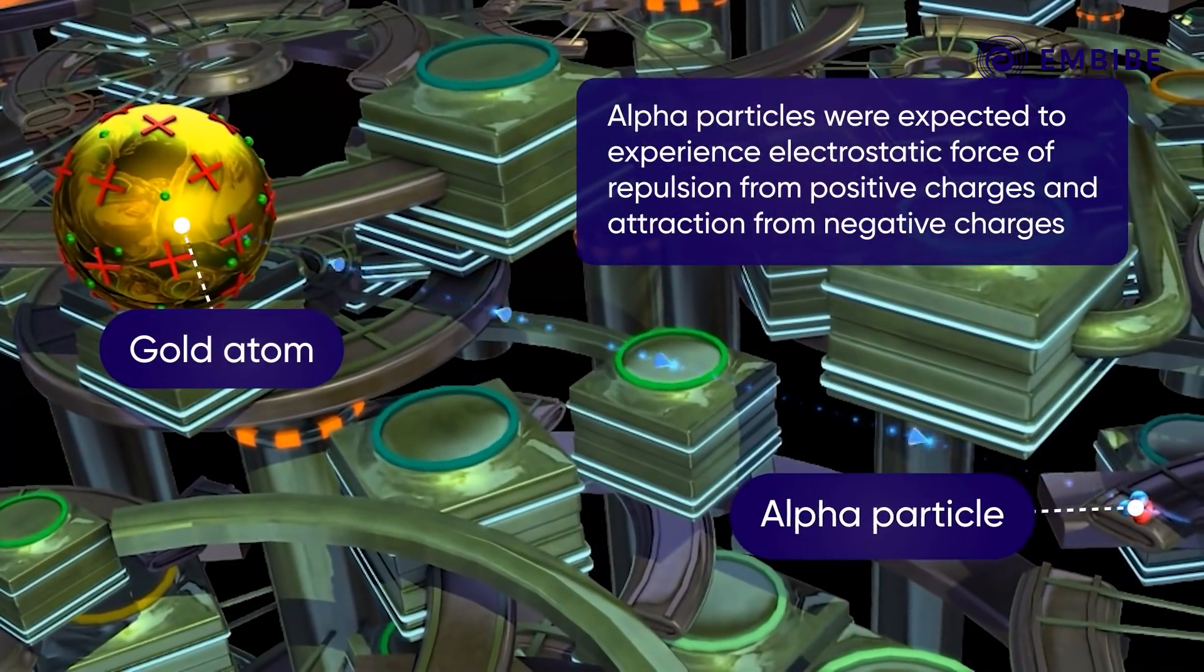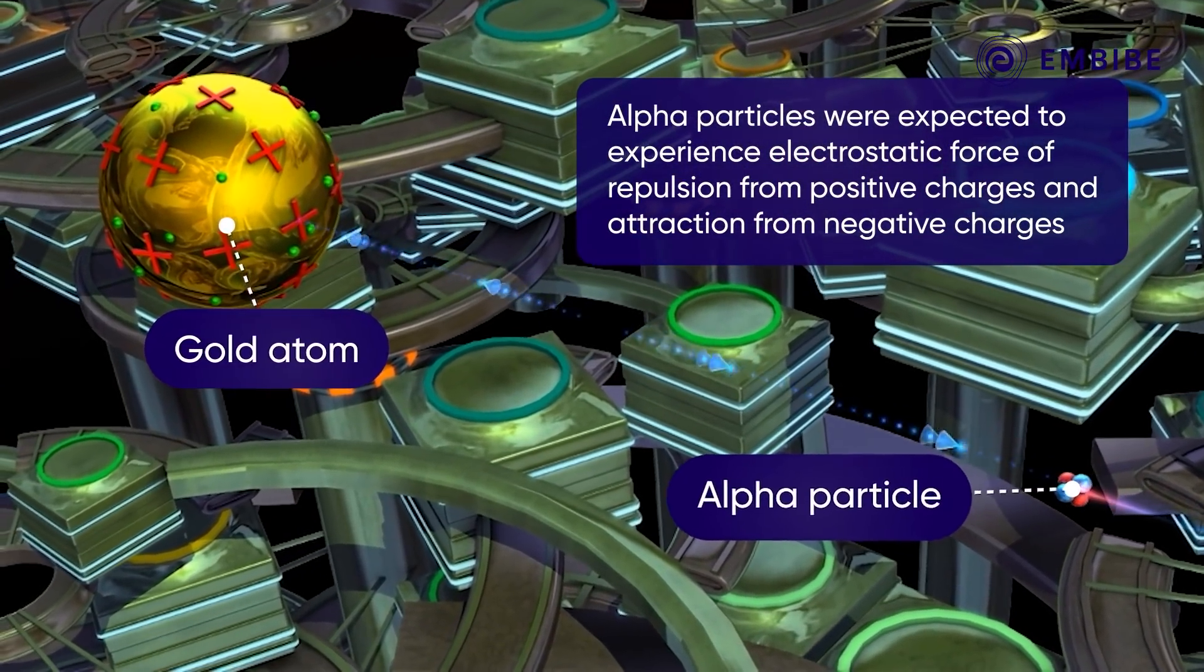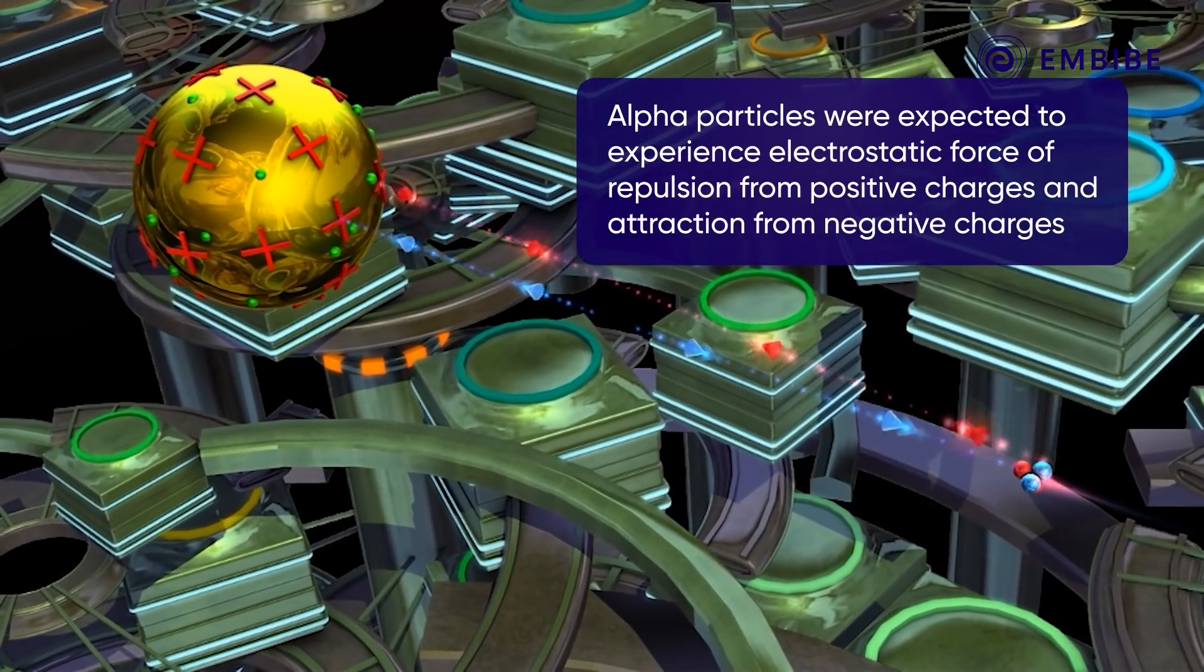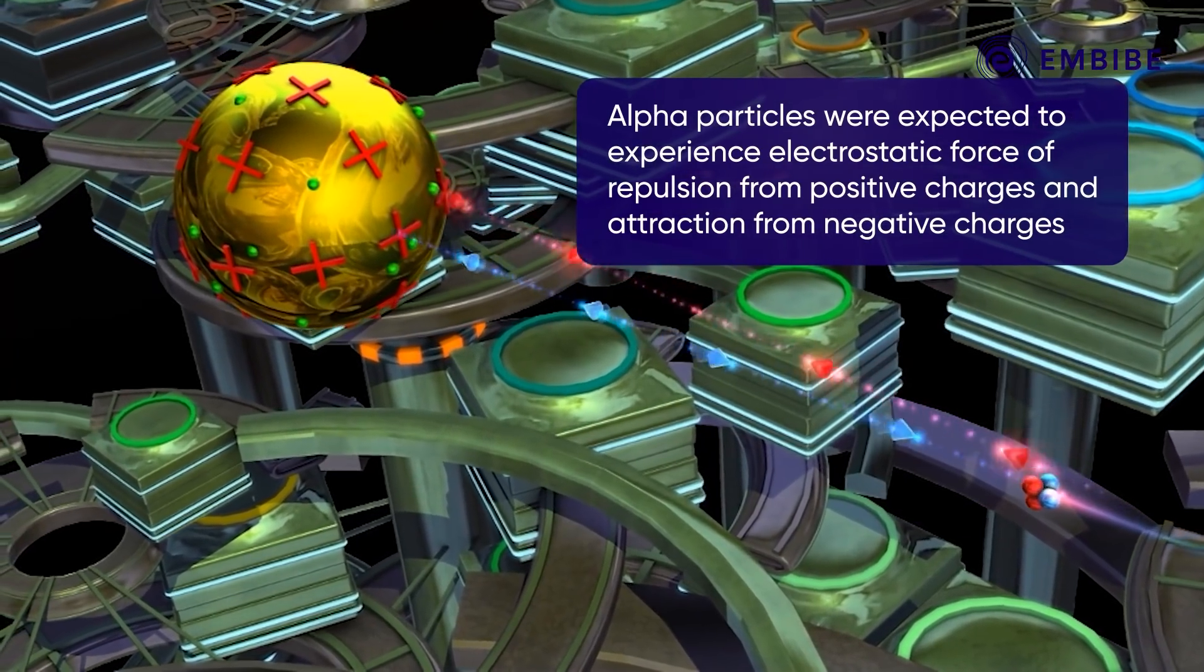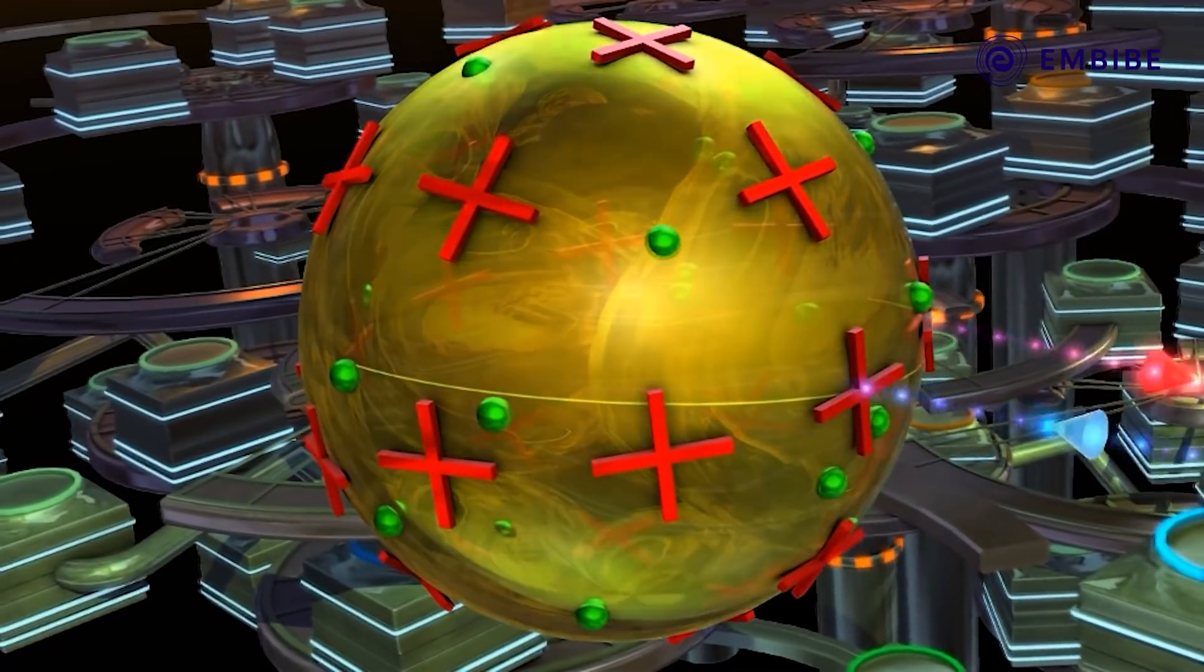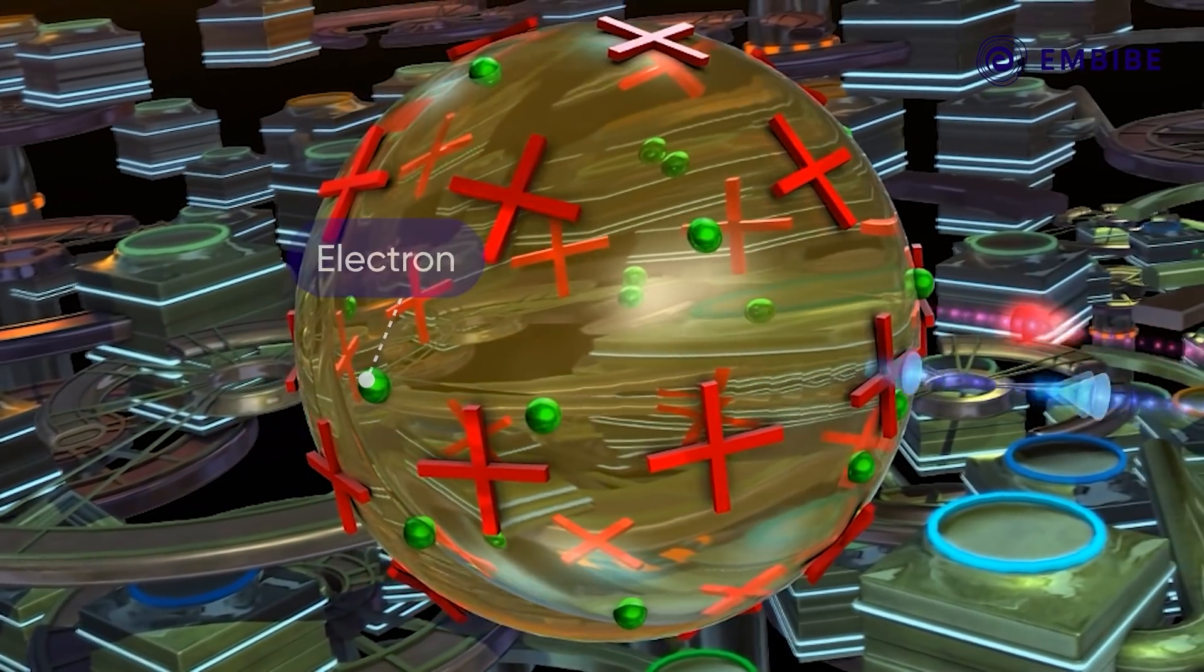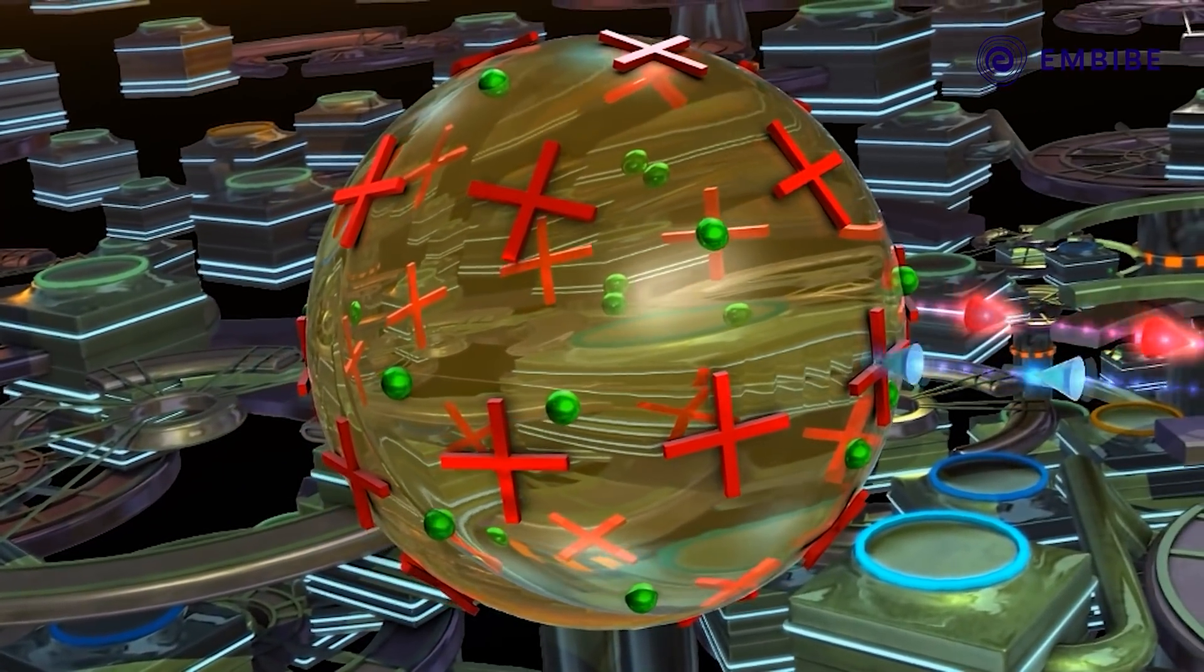It was expected that the alpha particles would experience electrostatic forces of repulsion from the positive charges and attraction from the negative charges in the foil. In Thompson's model, the positive charges and extremely light electrons are uniformly distributed over the atom.